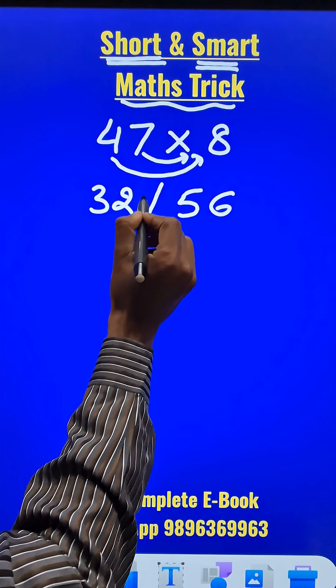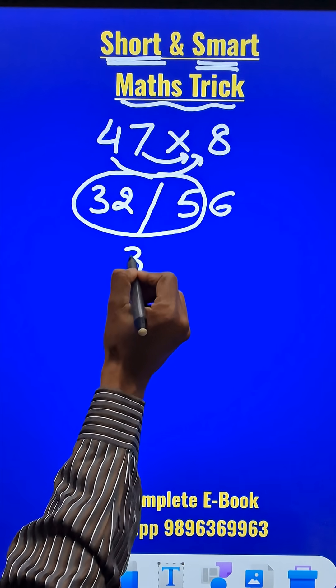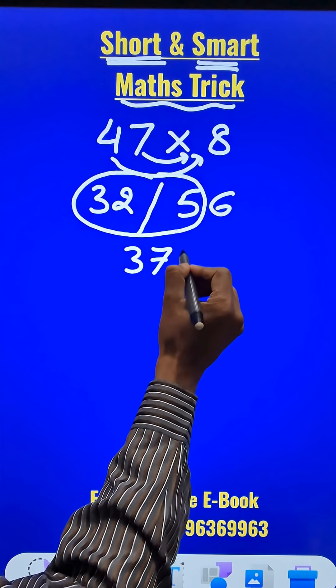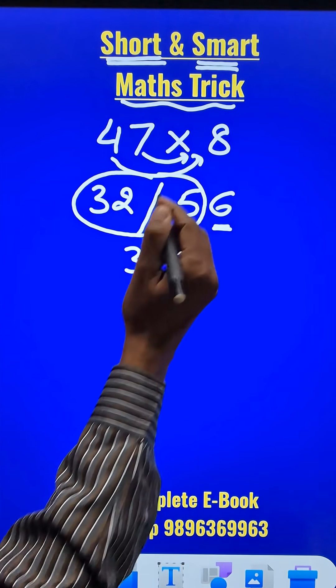Now if you can visualize these two numbers, just add 32 and the first digit here, you get 32 plus 5 is 37, and suffix this by this number 6, you get your answer. So 47 times 8 is 376.